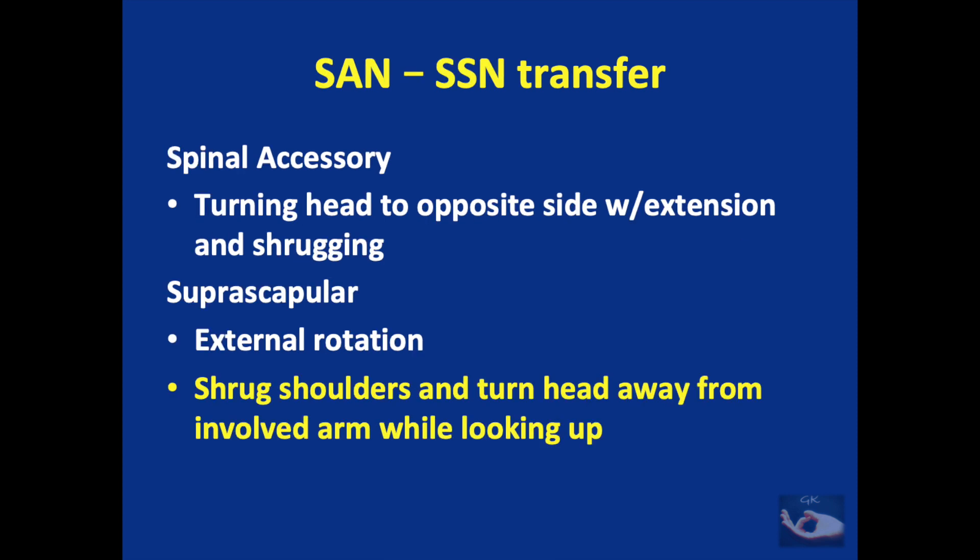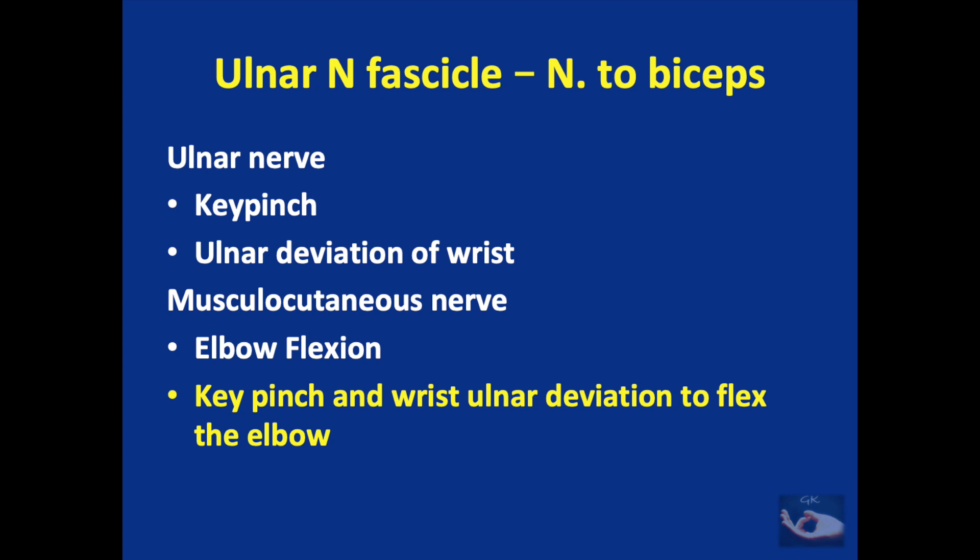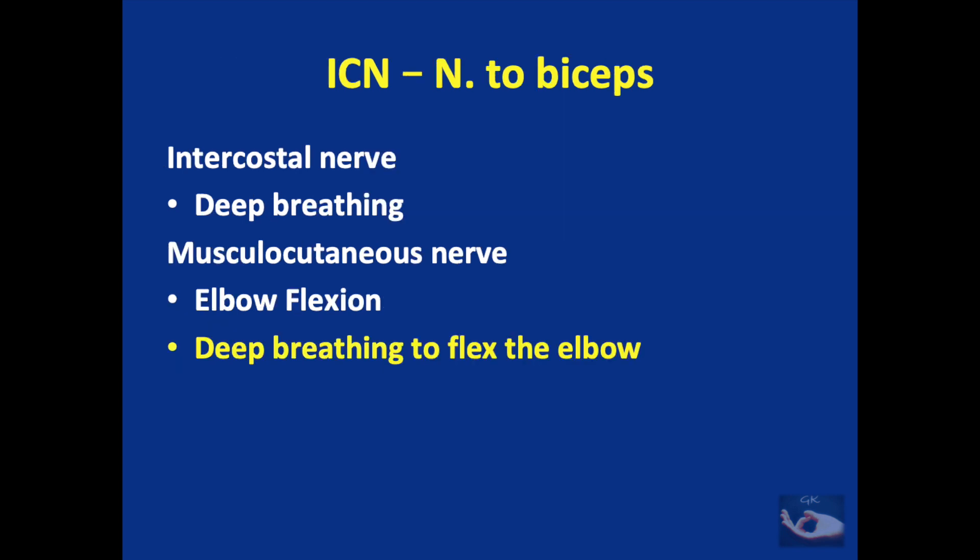The spinal accessory nerve innervates the trapezius, causing turning of the head to the opposite side with extension and shrugging. The suprascapular nerve achieves abduction and external rotation. To stimulate the spinal accessory nerve, the patient is asked to shrug the shoulders and turn the head away from the involved arm while looking up. The ulnar nerve mainly concentrates on key pinch and ulnar deviation of the wrist, whereas the musculocutaneous nerve — to which the ulnar nerve fascicle is given — concentrates on elbow flexion. To achieve elbow flexion, the patient performs key pinch and ulnar wrist deviation while simultaneously flexing the elbow. For the intercostal nerve transfer to the musculocutaneous nerve, the patient is asked to perform deep breathing to flex the elbow.